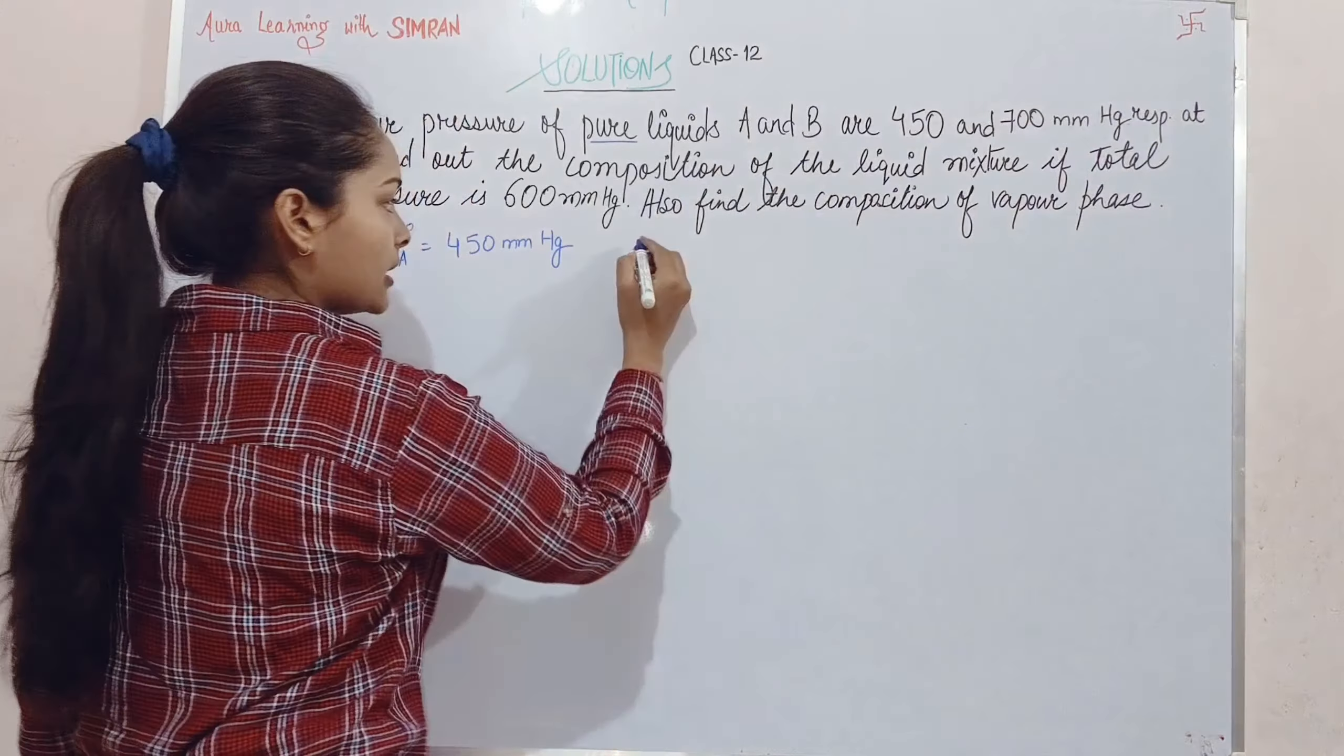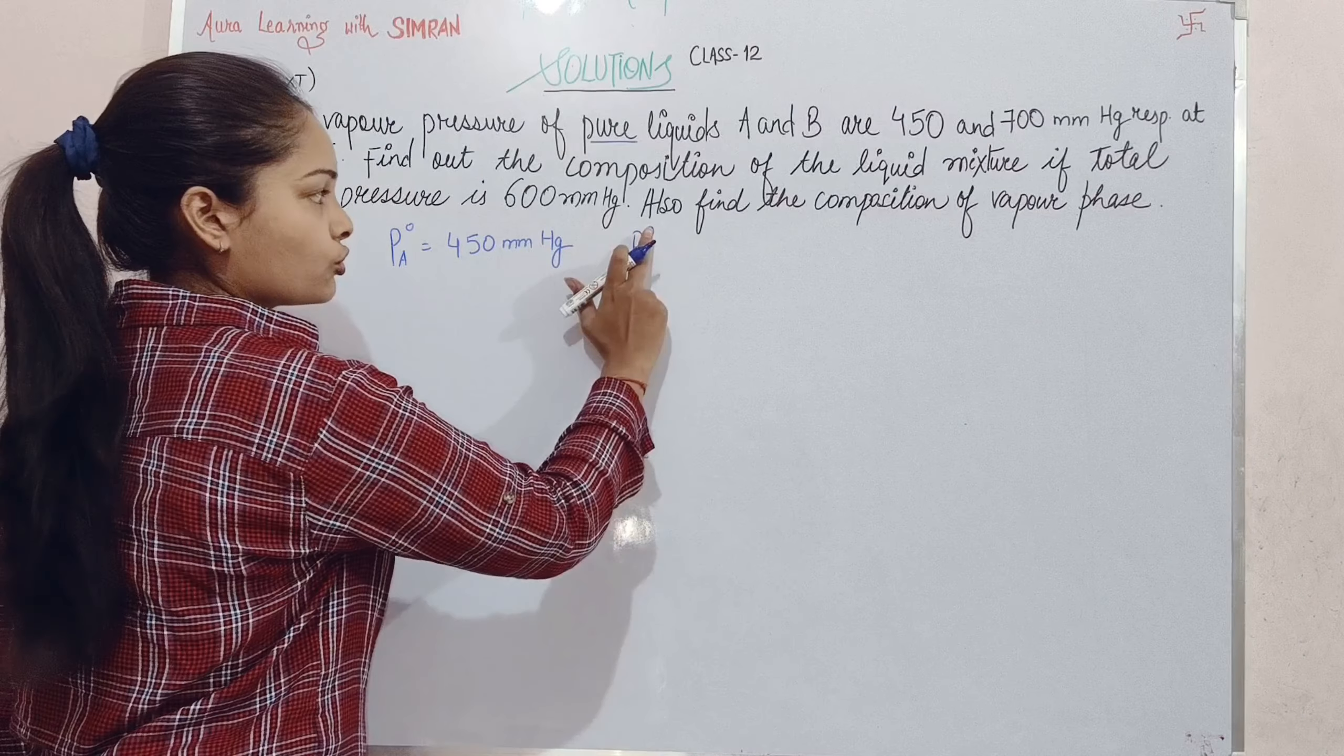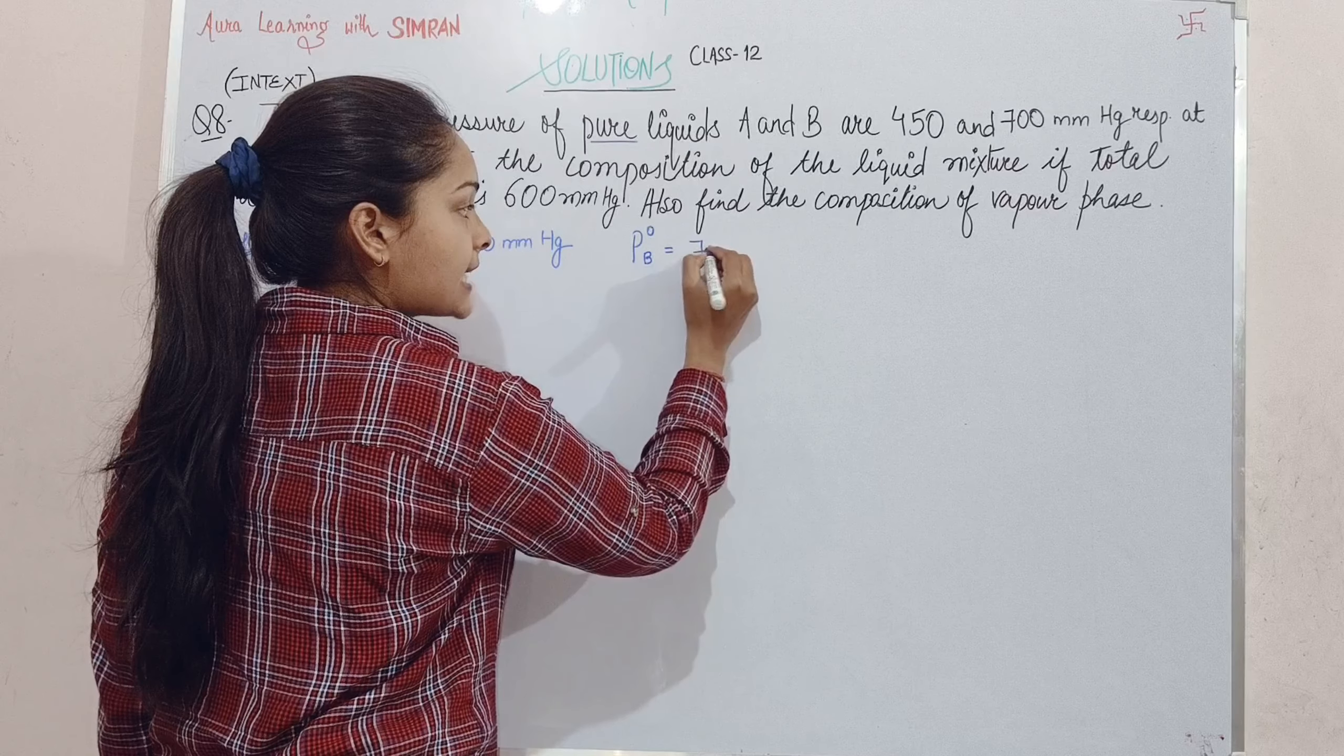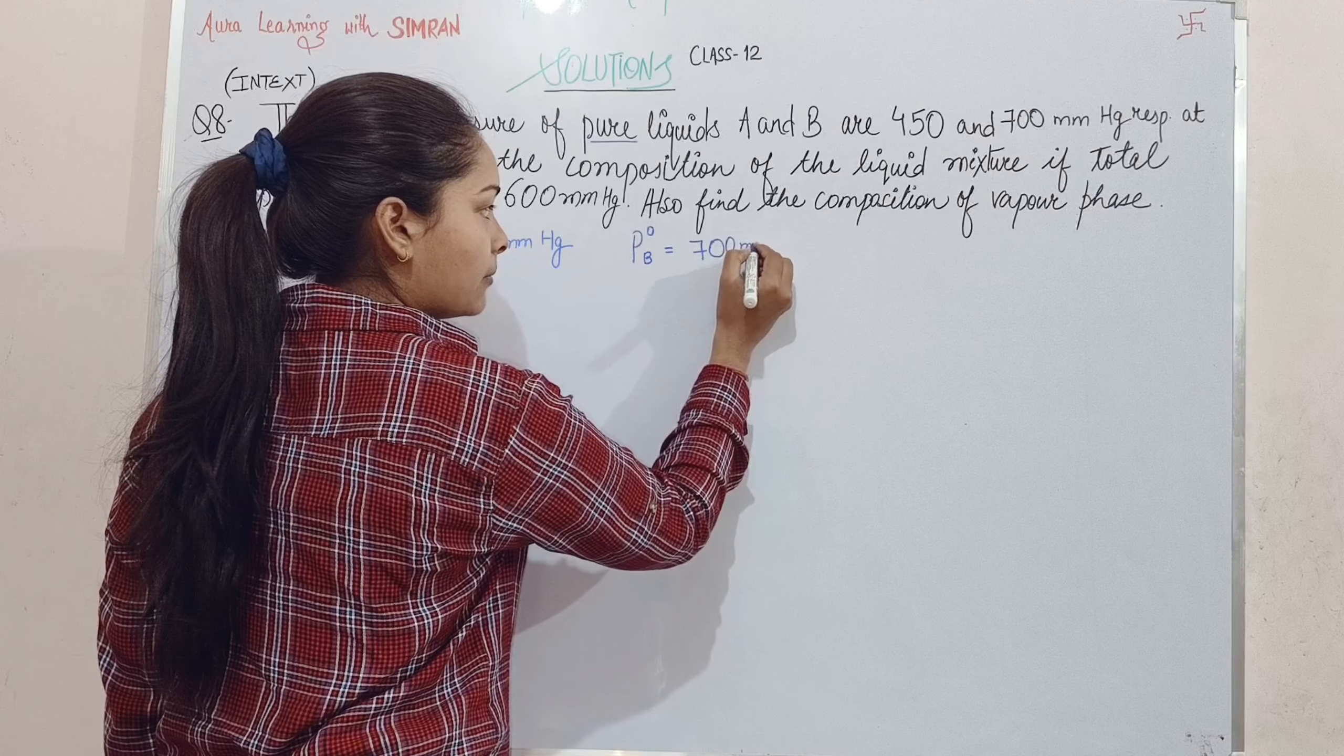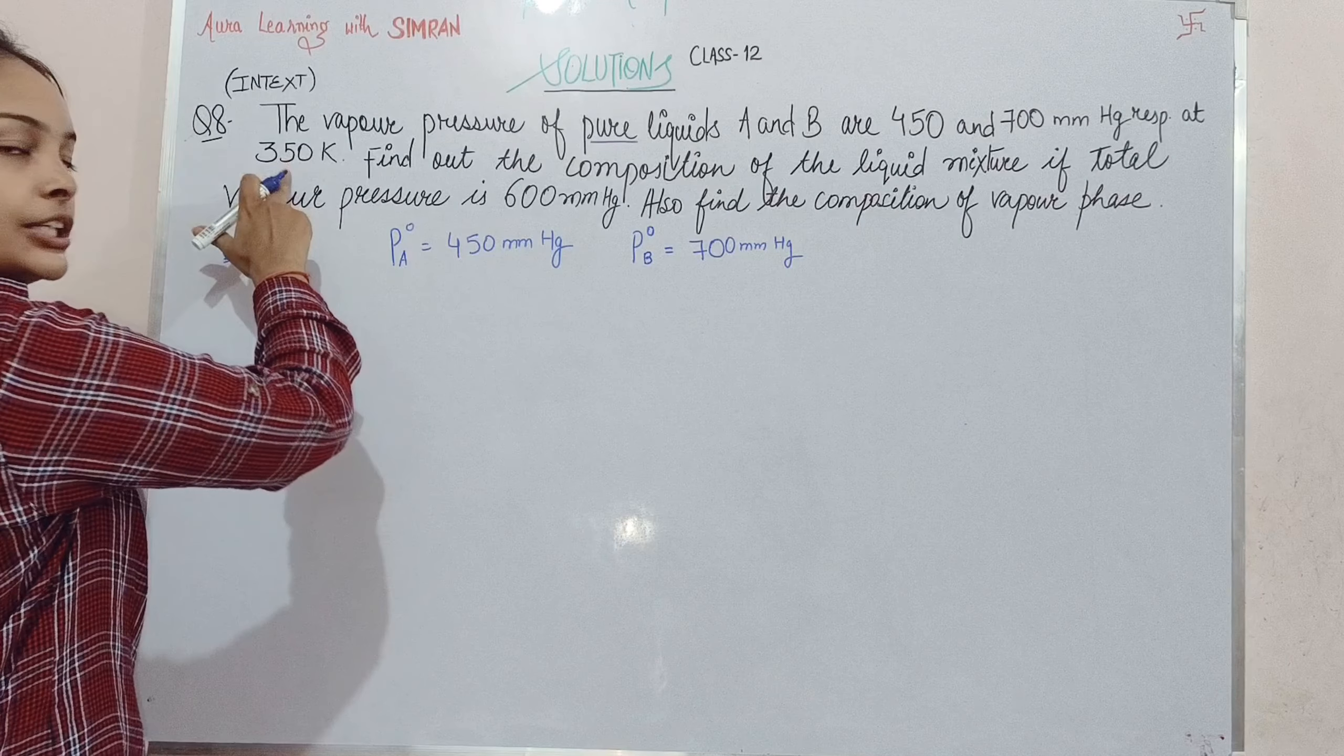P°B, if it is pure, we put a naught on it - 700 mmHg at 350 K.